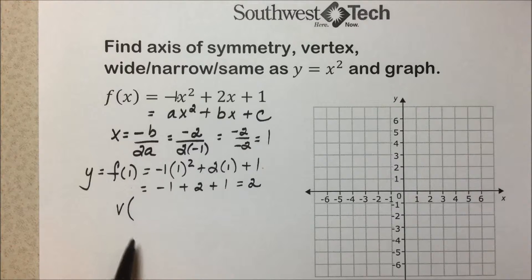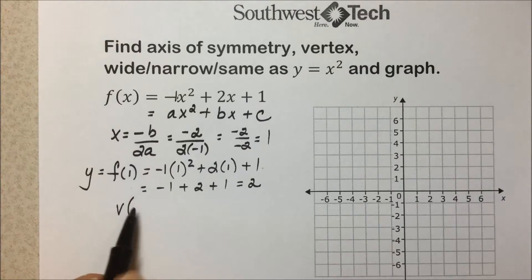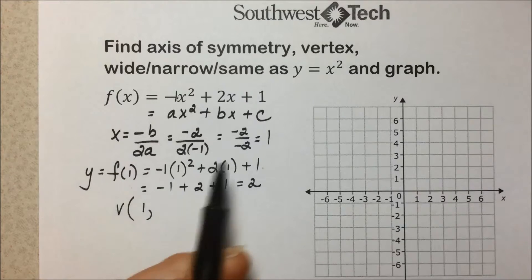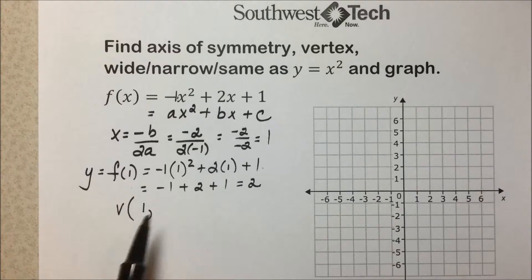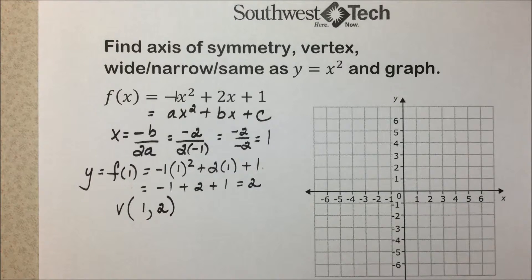So to identify the vertex, which is -b/2a for the x coordinate, we found a 1. Plugging that value into the function, we found the associated 2. So the vertex of this quadratic function is (1, 2).